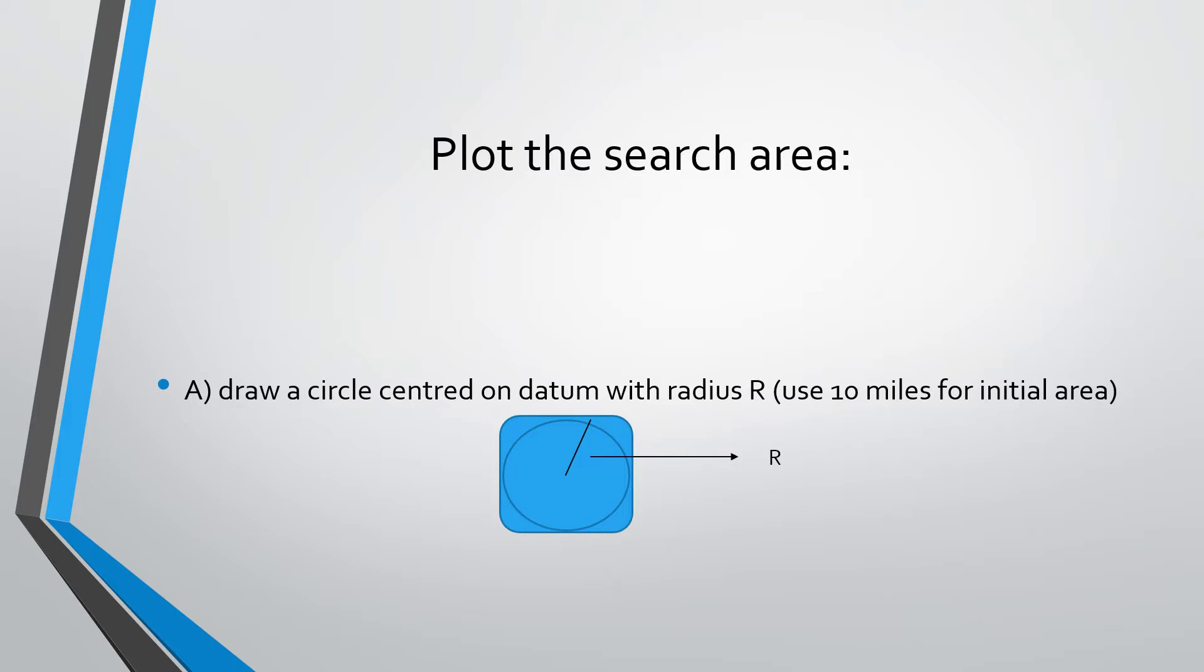Initially, draw a circle centered on datum with radius R, where you can use 10 miles for initial area, or you can calculate the radius as AT divided by 2. If time is not available to compute the area, use 10 miles; otherwise, compute the area and divide by 2 to get the search radius.